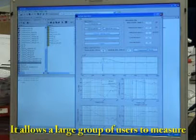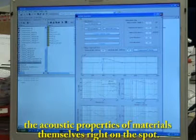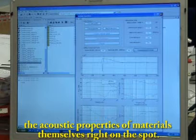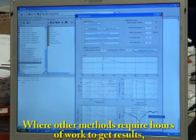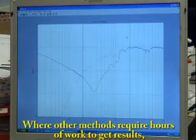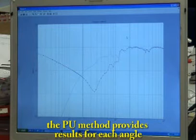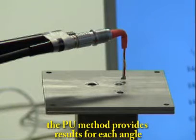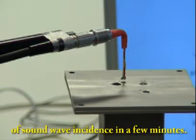It allows a large group of users to measure the acoustic properties of materials themselves right on the spot. Where other methods require hours of work to get results, the PU method provides results for each angle of sound wave incidence in a few minutes.